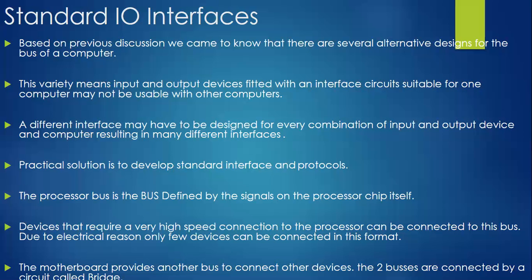We have a processor bus to which the processor is directly connected. Devices expecting very high speed connection to the processor are connected directly to this processor bus. For electrical reasons, we cannot connect all functional units to this processor bus. Those expecting better performance are connected to the processor bus; those expecting a bit less are managed on a separate bus.